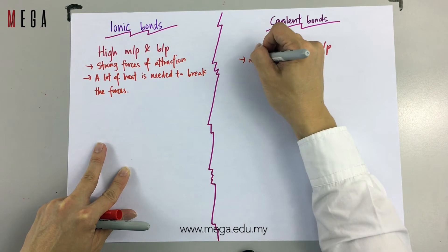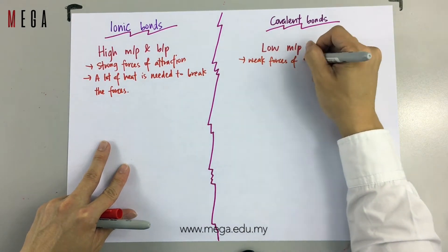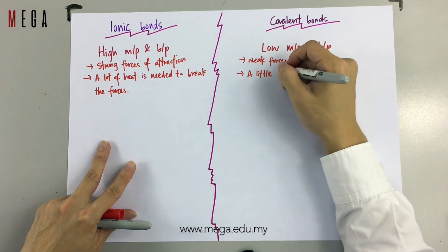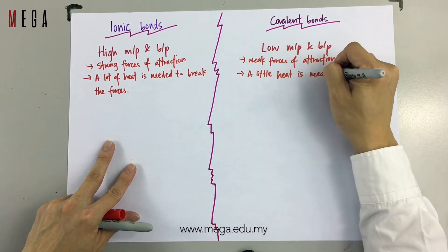Whereas for covalent compounds that have low melting point and boiling point, they have weak forces of attraction. Therefore, a little heat is needed to break the bond.